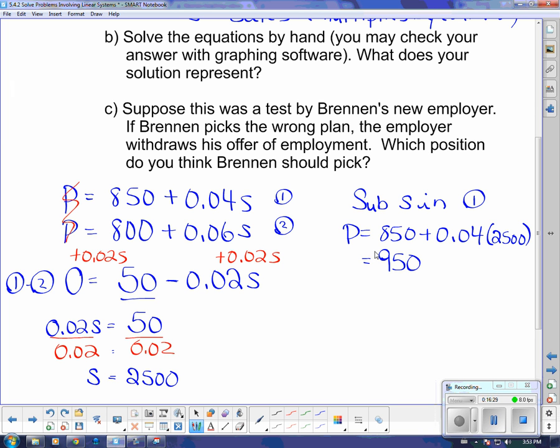So what this actually means is that the pay for both plans is $950 if we sell $2,500 worth of goods.